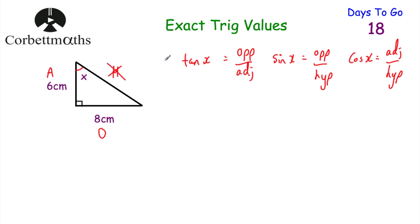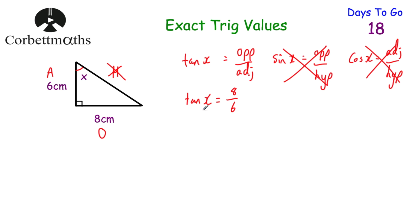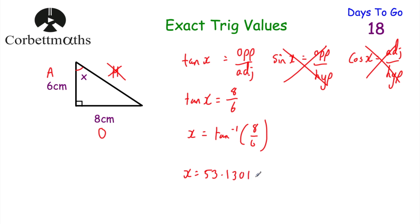We cross off any trig ratio that uses the hypotenuse, so no sine and no cos — we're going to use tan. Tan x = opposite divided by adjacent, so tan x = 8 divided by 6. Now we want to find the angle, so we need the inverse tan: x = tan⁻¹(8/6). Using a calculator — shift, tan, then 8 over 6 — gives x = 53.1301...°, which to two decimal places is 53.13 degrees. Well done if you got that.